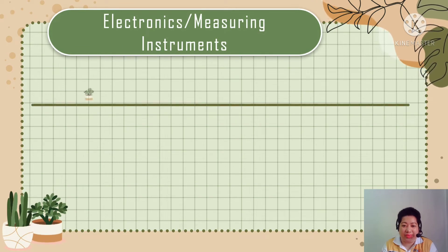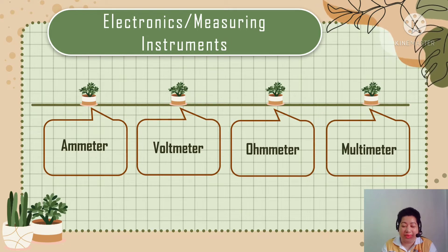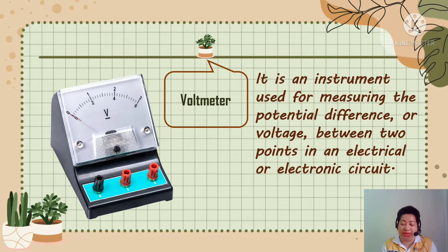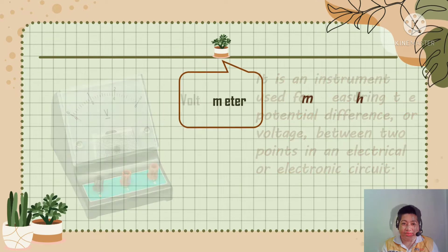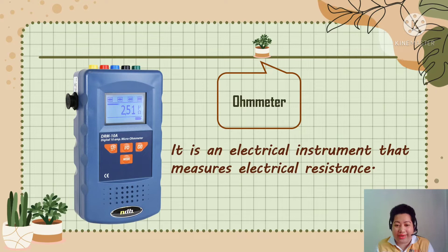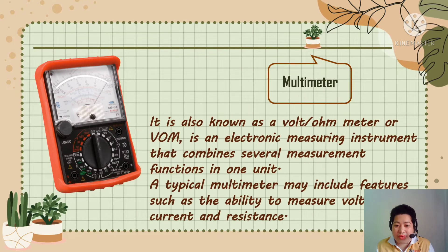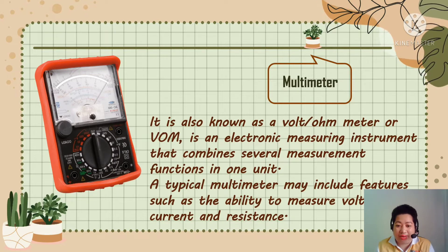Here are the electronics or measuring instruments that we use in computer system servicing: Ammeter, Voltmeter, Ohmmeter, and Multimeter. Ammeter is a measuring instrument used to measure the current in a circuit. Electric currents are measured in amperes. Voltmeter is an instrument used for measuring the potential difference or voltage between two points in an electrical or electronic circuit. Ohmmeter is an electrical instrument that measures electrical resistance. Multimeter is an electronic measuring instrument that combines several measuring functions in one unit. A typical multimeter may include features such as the ability to measure voltage, current, and resistance.